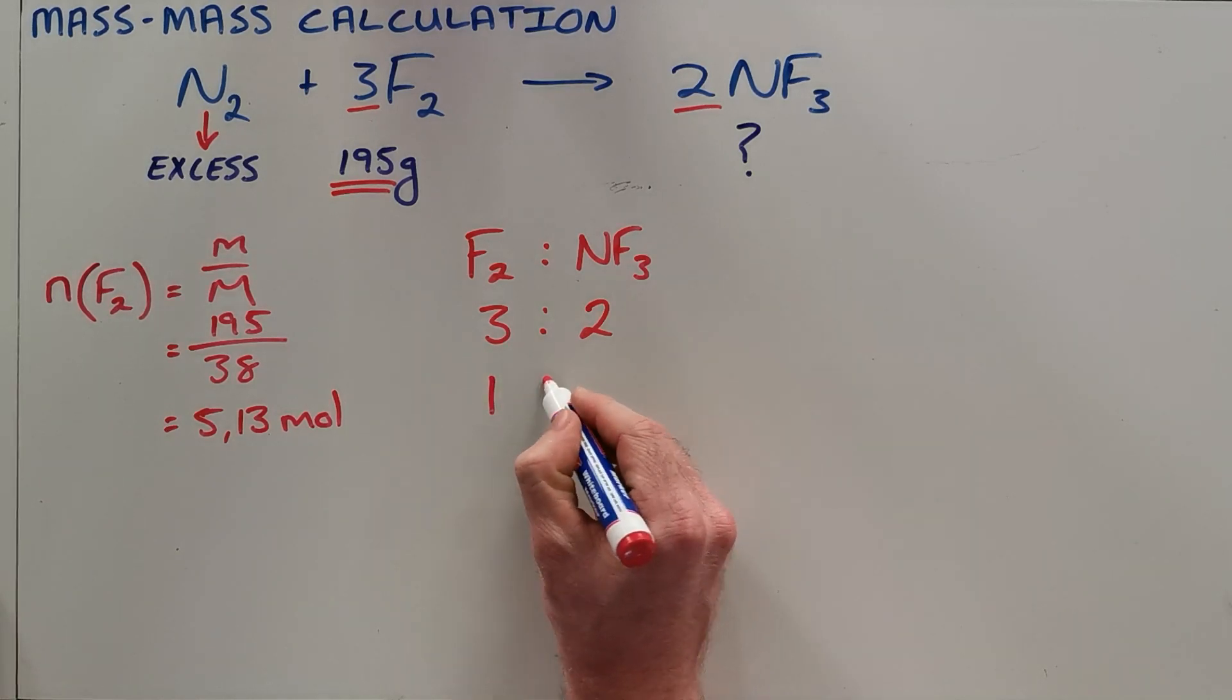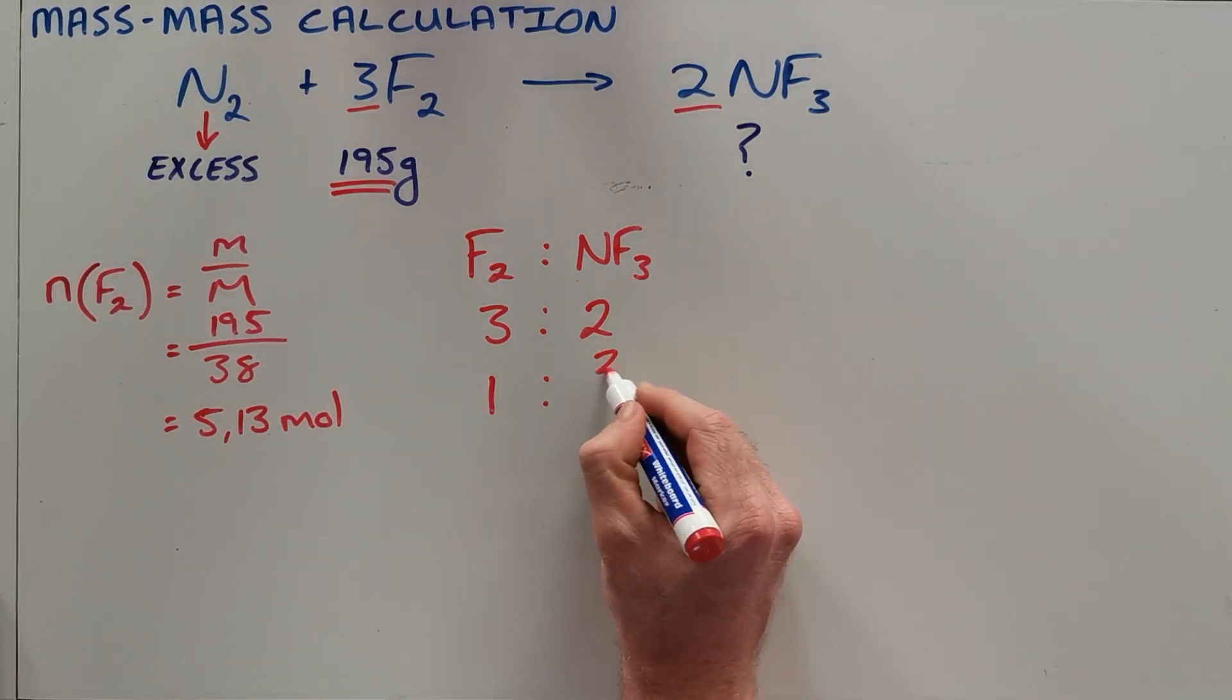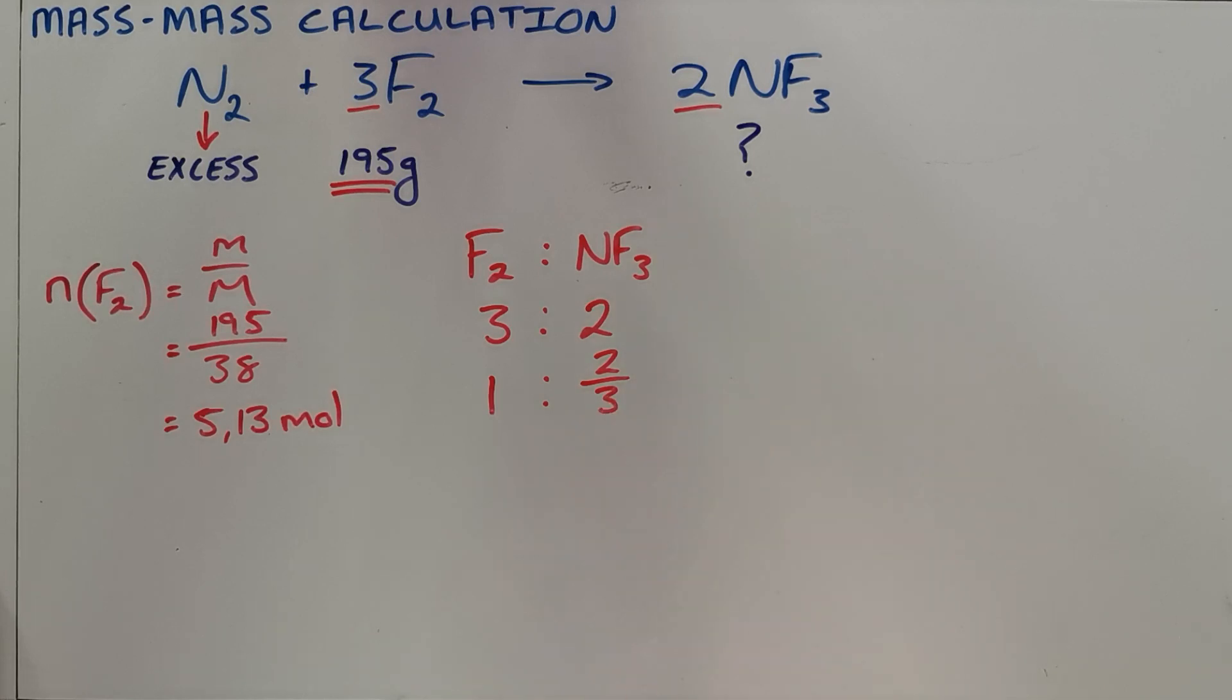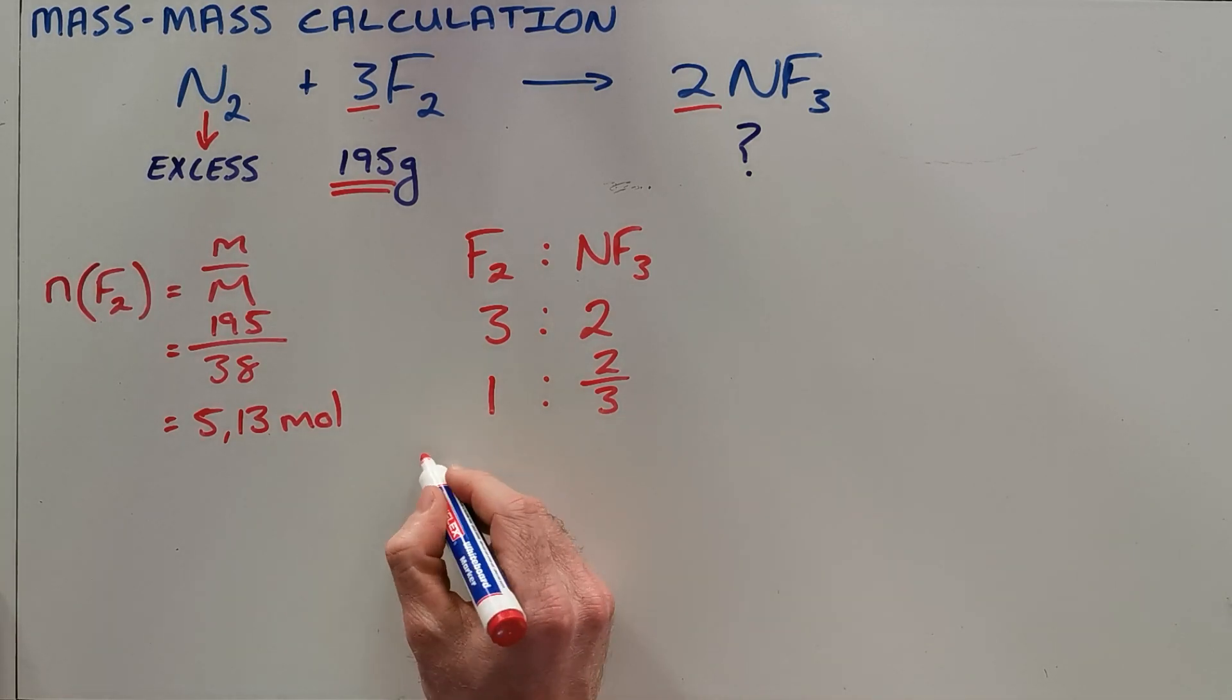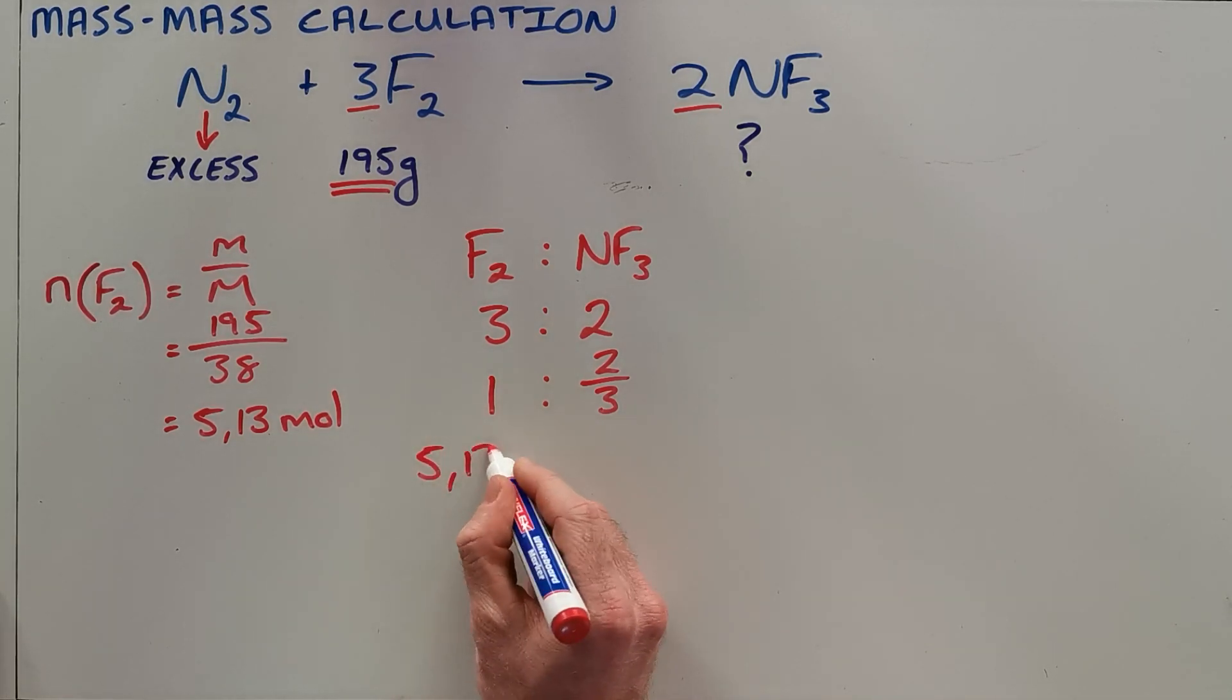We can simplify this by saying it is also seen as a ratio of 1 to 2/3. I've found that by dividing both sides by 3. What this means is that if we start out with 5.13 moles of fluorine as we've calculated,